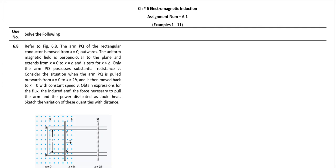Hello students, in this video we have 8th illustration of chapter 6. The question is, refer to figure 6.8, the arm PQ of rectangular conductor is moved from x equal to 0 outward.